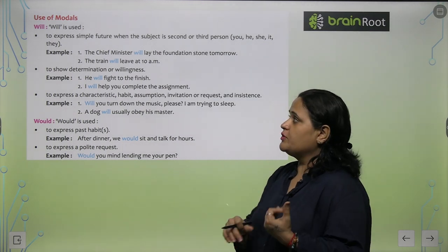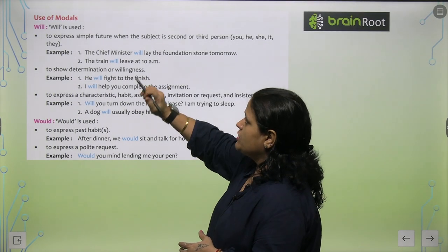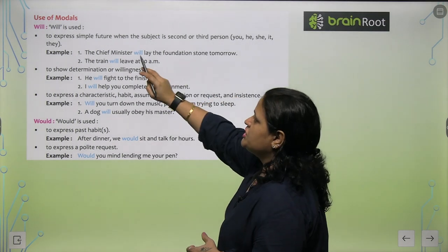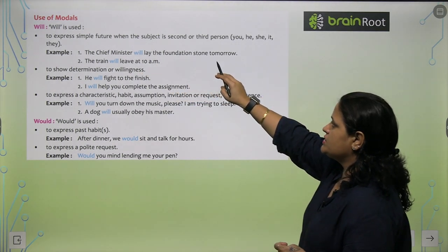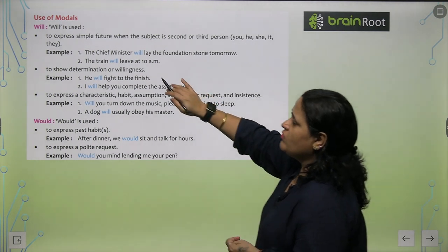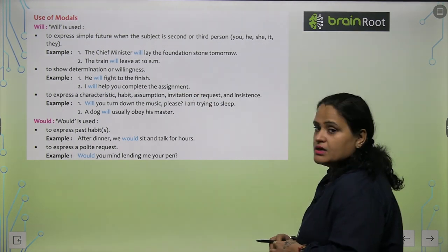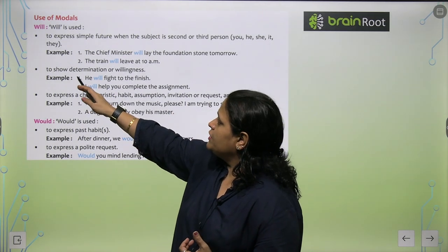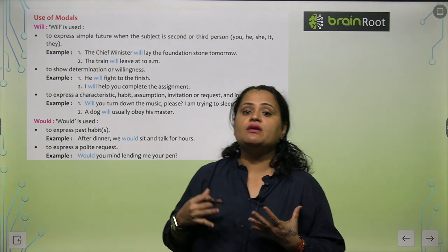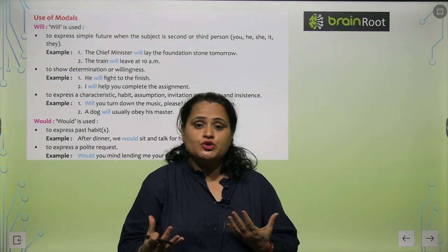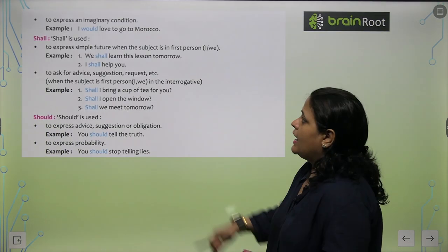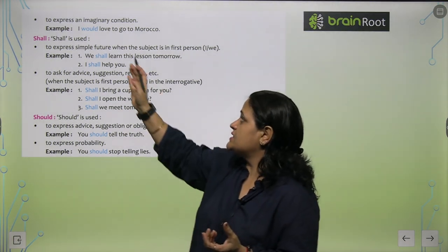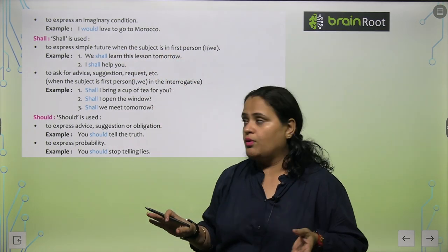Now I am explaining the common modal verbs. 'Will' kab use hota hai? Will is used for simple future when the subject is second or third person — like you, he, she, it, and they. For example: 'The chief minister will lay the foundation stone tomorrow.' 'The train will leave at 10 am.' Also used to express determination or willingness, and to express an imaginary condition — like 'I would love to go to Morocco.'